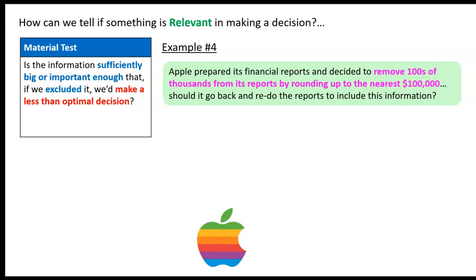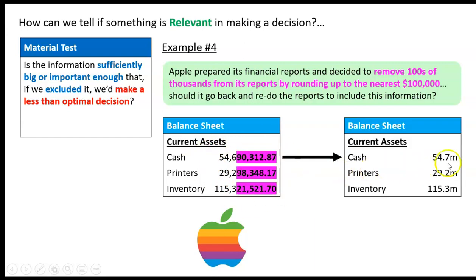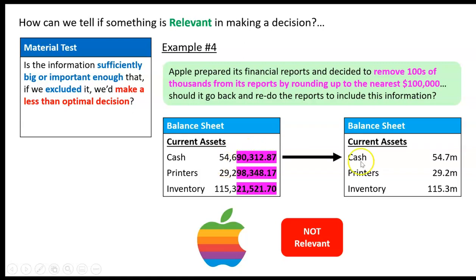If you jump on the ASX website, you can get this for any Australian business on the share market — there are no cents, no tens of dollars, no hundreds of dollars, and sometimes not even thousands. So what we're going to do is get rid of all that detail. It probably makes decision-making worse because it looks so complicated. We'll just express it in millions: instead of the full figure, we write 54.7 million, 29.2 million, and so on. Businesses do this all the time. Is it going to affect your decision-making if you have the full detail versus the rounded figure? No. That data is not really relevant to future decision-making. So, we're fine to round up — for Apple — to the nearest hundreds of thousands or millions.